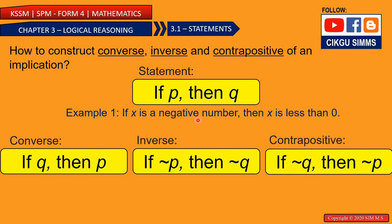If you want to make a converse statement you need to reverse this. If Q then P, so if x is less than 0 then x is a negative number.